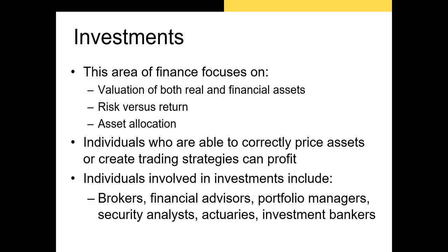There are two types of assets in investments: real and financial assets. The value of real assets is tied to their tangibility — think of a car or a home. The value of financial assets is dependent upon their underlying real assets; examples include stocks and bonds, whose value is derived from the underlying assets of the firm or government that issues them. Asset allocation refers to the strategy of building a diversified portfolio of assets to ensure that when the value of one asset or asset class falls, the value of the other assets in the portfolio do not. This is the fundamental idea behind portfolio diversification.